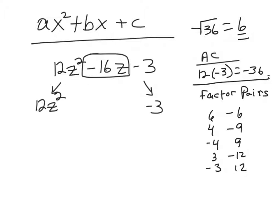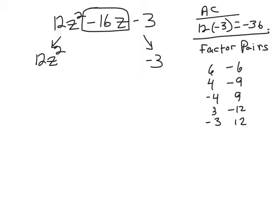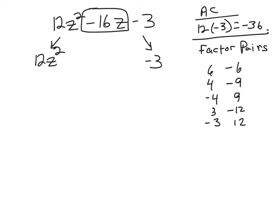So I ask if 2 goes into negative 36. Well, 2 goes into 36 18 times. So either 2 and negative 18 or negative 2 and 18. And then, of course, 1 is going to go into it. 1 and negative 36 or negative 1 and 36.